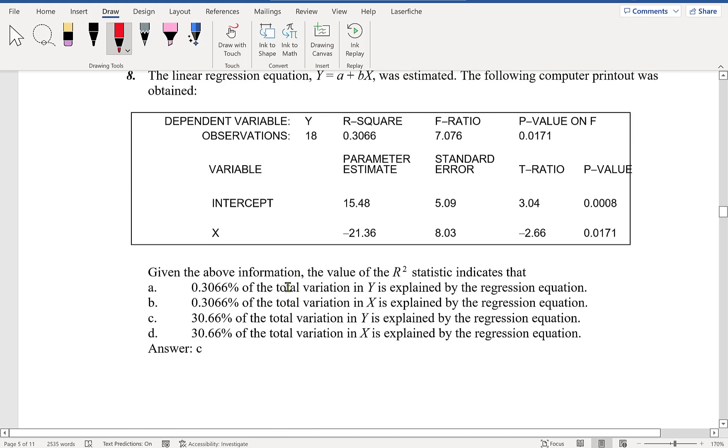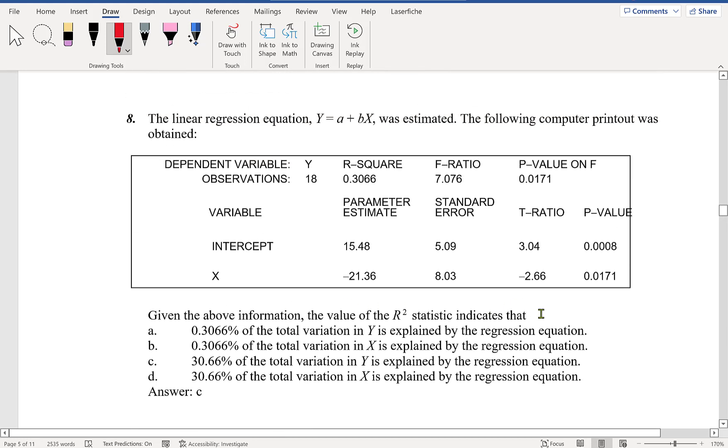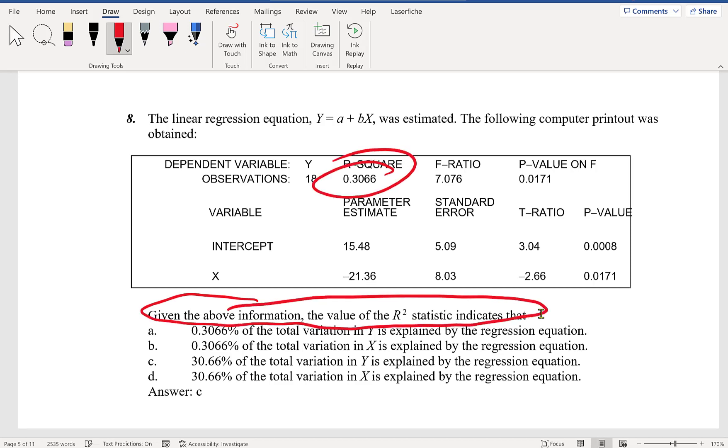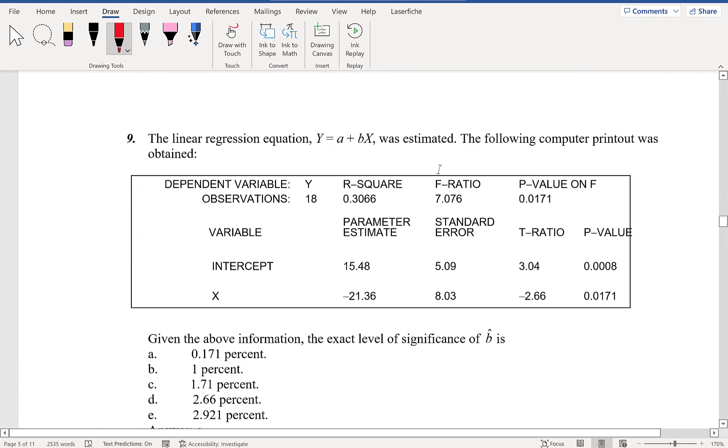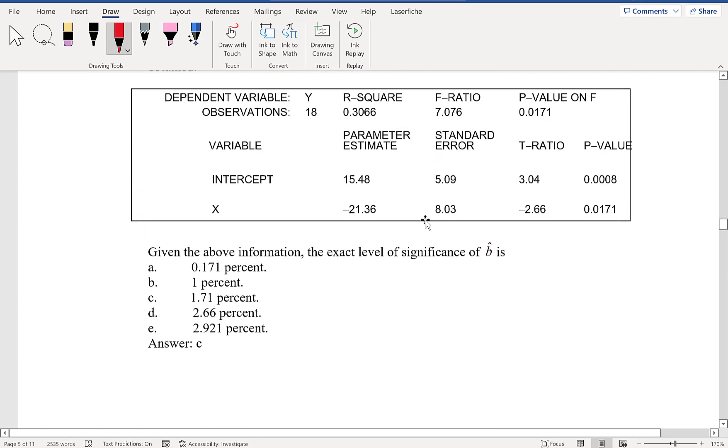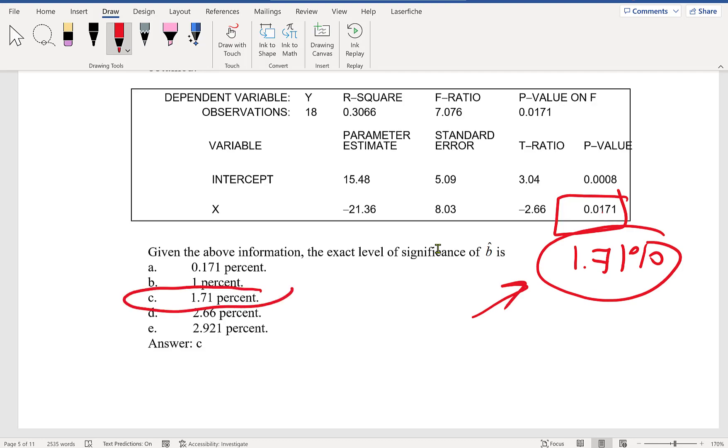Question 8: Given the information, the value of the R-square statistic indicates that 30.66% of the total variation in Y is explained by the regression equation. Number 9: Given the above information, the exact level of significance of b-hat—we look at the p-value, which is 1.71%. This shows you the exact level of significance.